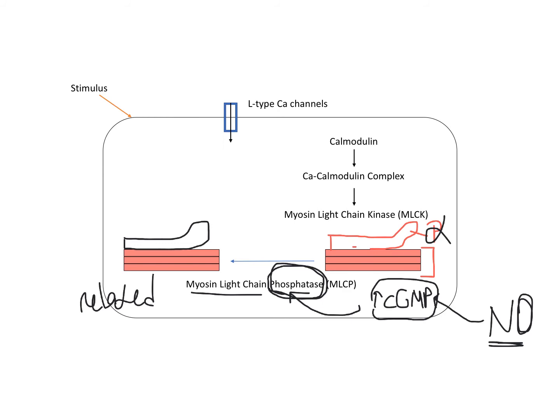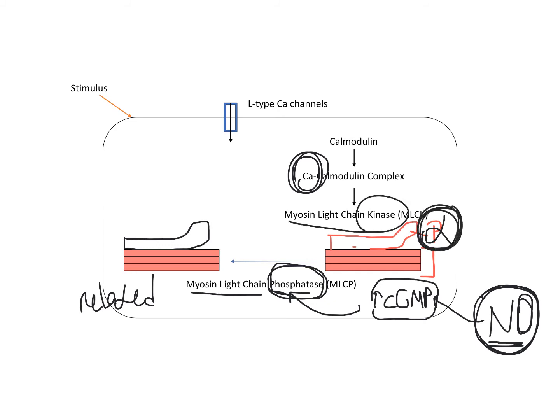Contraction occurs via calcium and relaxation occurs via nitric oxide. Contraction occurs via phosphorylation, and phosphorylation is mediated by myosin light chain kinase. Dephosphorylation causes relaxation, and dephosphorylation is caused by myosin light chain phosphatase.